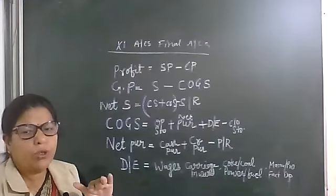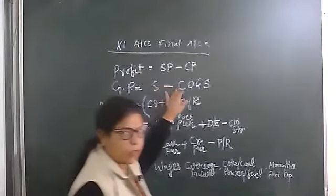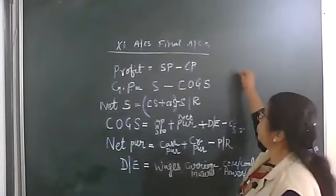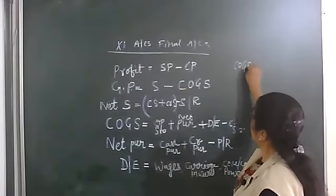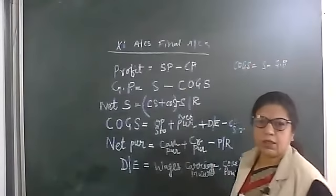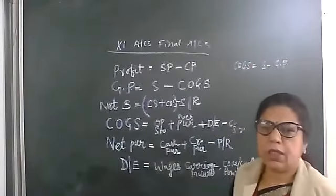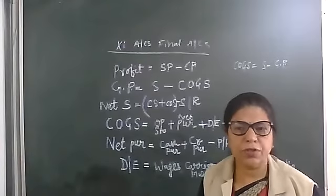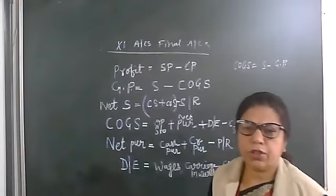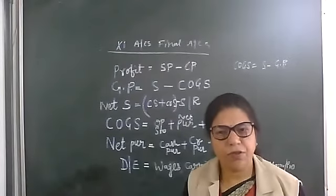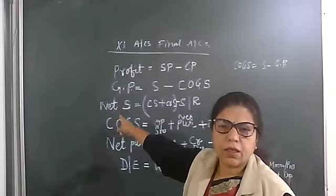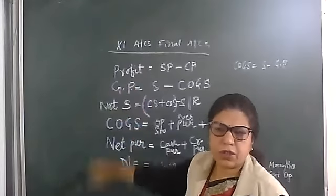Now, more formulas. Another formula: cost of goods sold can also be calculated as sales minus gross profit. When we deduct gross profit from the net sales, we can find out the cost of goods sold. The sales should be net sales and GP means gross profit.